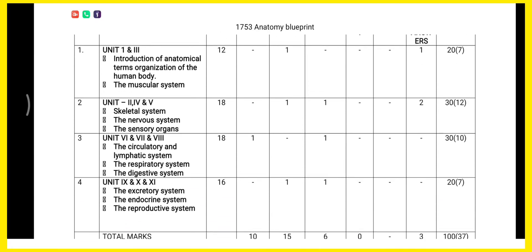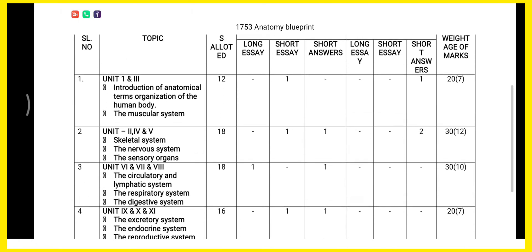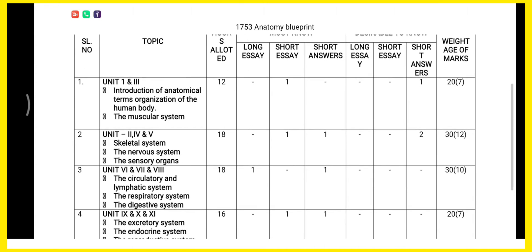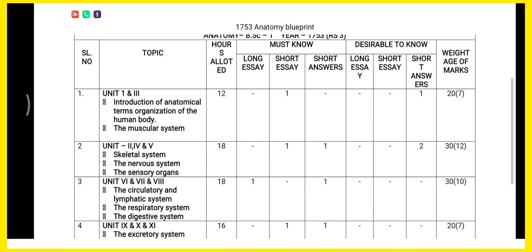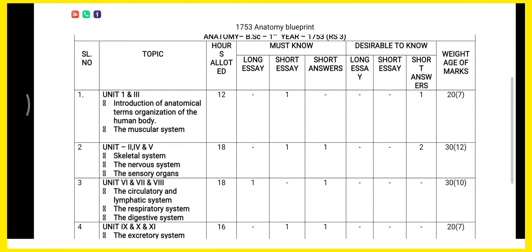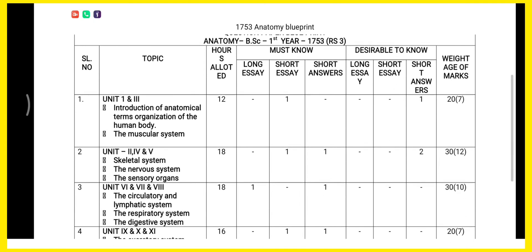Unit 2, 4, and 5 consist of 12 marks. There you can see the skeletal system, the nervous system, and the sensory organs. For the must know column, there is a 90% chance there will be one question for 5 marks, one question for 2 marks, and two questions for 2 marks — totaling 12 marks.